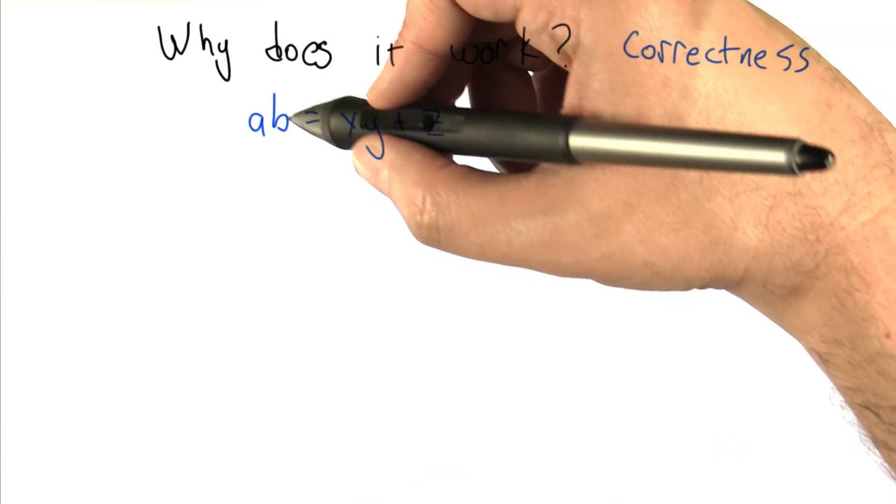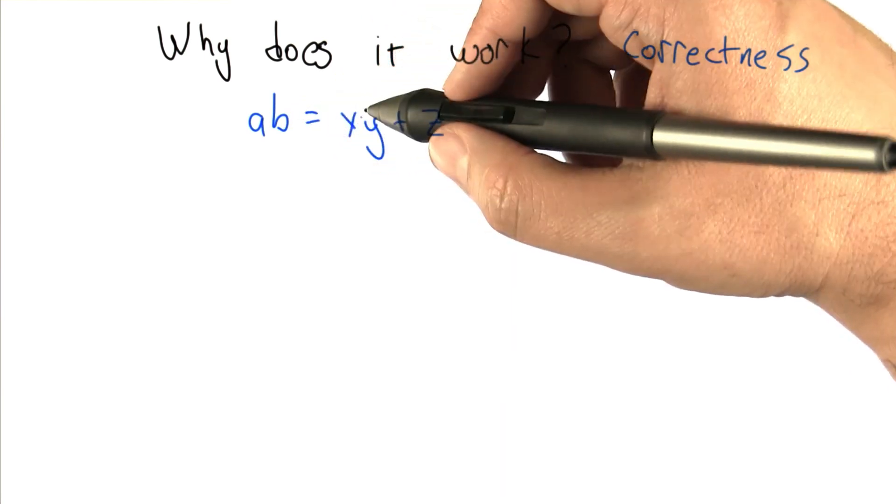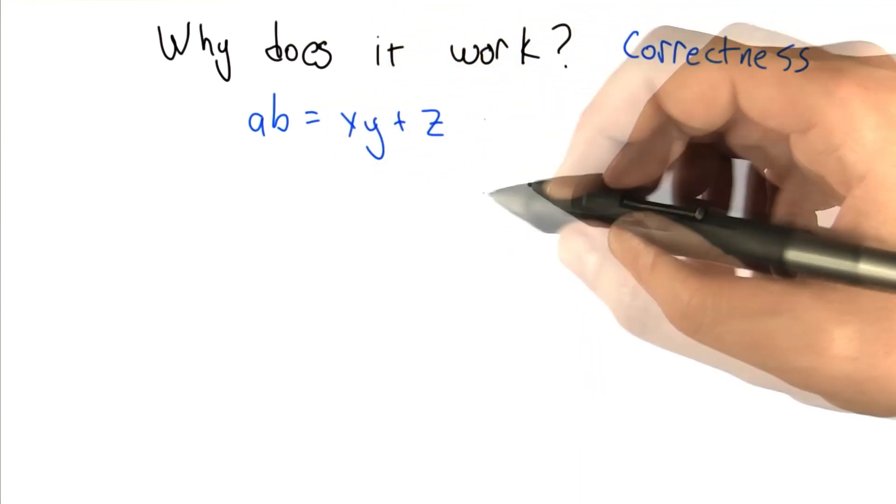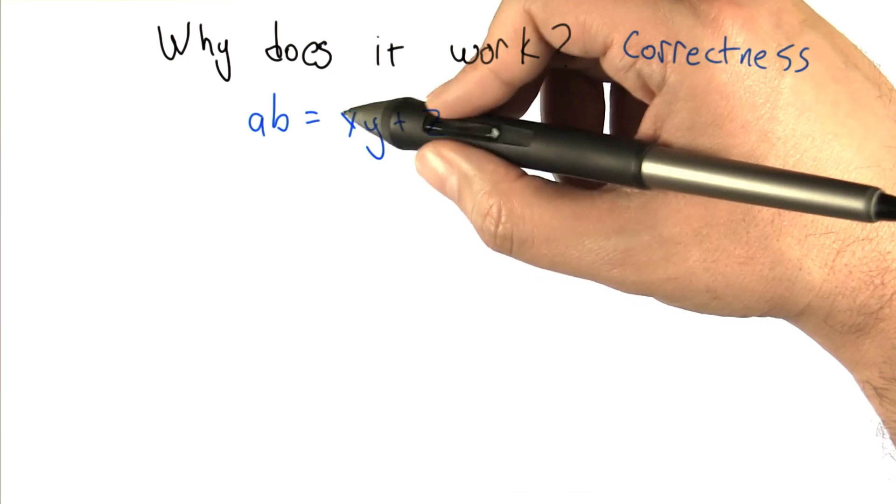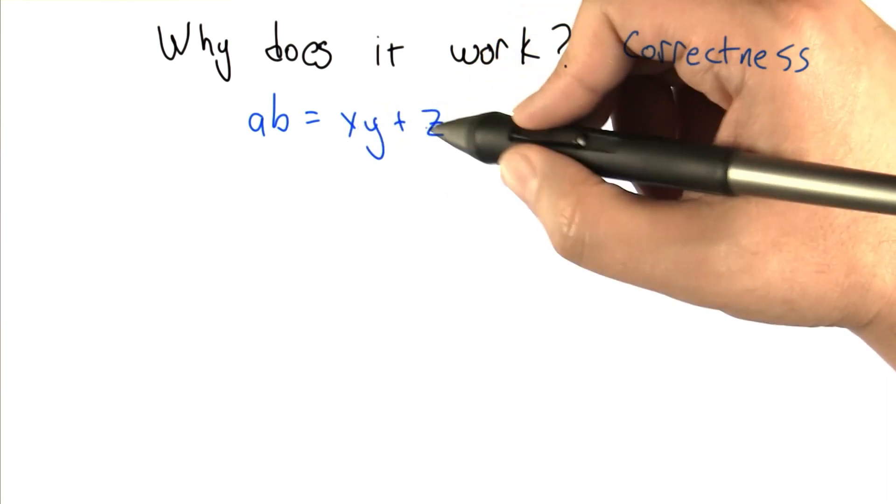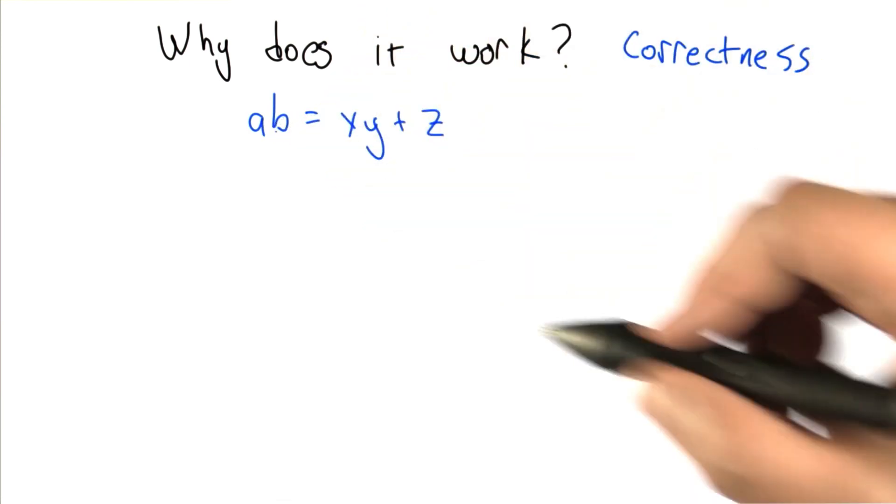In particular, what holds is that the product of a and b is always equal to the product of x and y plus z. And again, since x is going to be counting down and eventually reach zero, z is going to ultimately have to hold the product of a and b.